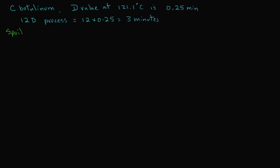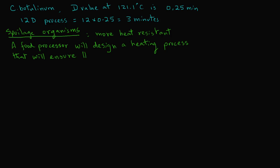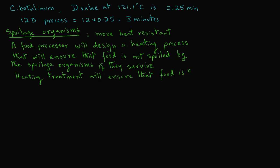The second type of organisms that are important are spoilage organisms. Typically, these organisms are more heat resistant than the pathogenic organisms. They require a higher heat treatment to inactivate compared to the pathogenic organisms. A food processor will design a heating process that will ensure that the food is not spoiled by the spoilage organisms if they survive. Because the spoilage organisms require much higher heat treatment, the heating treatment will ensure that the food is also safe by inactivating the pathogenic organisms.